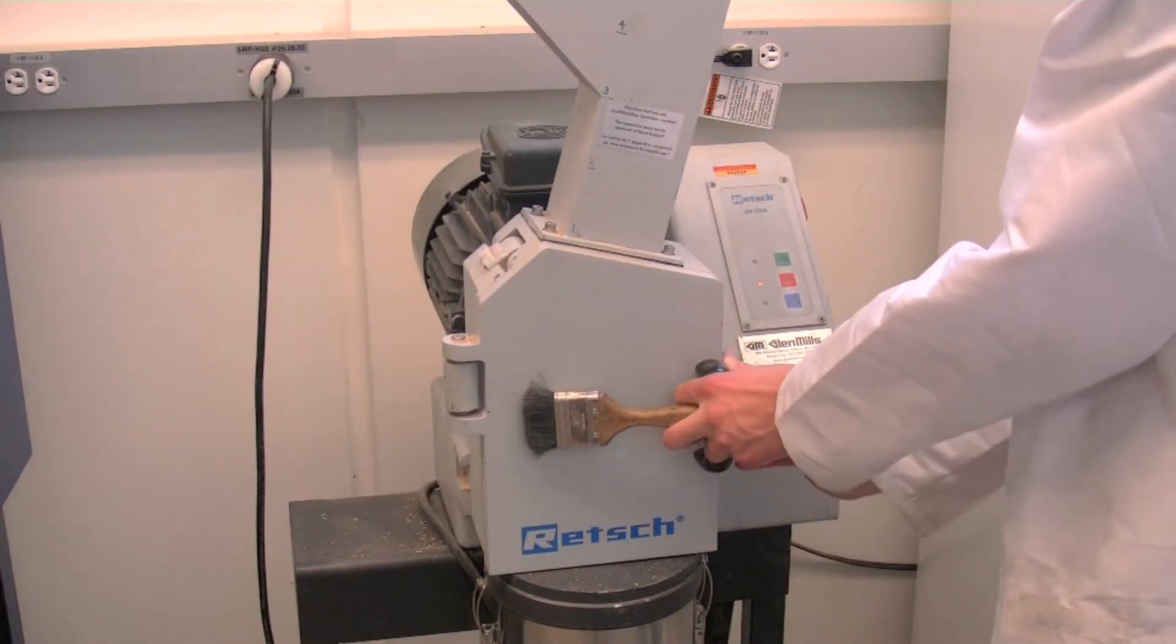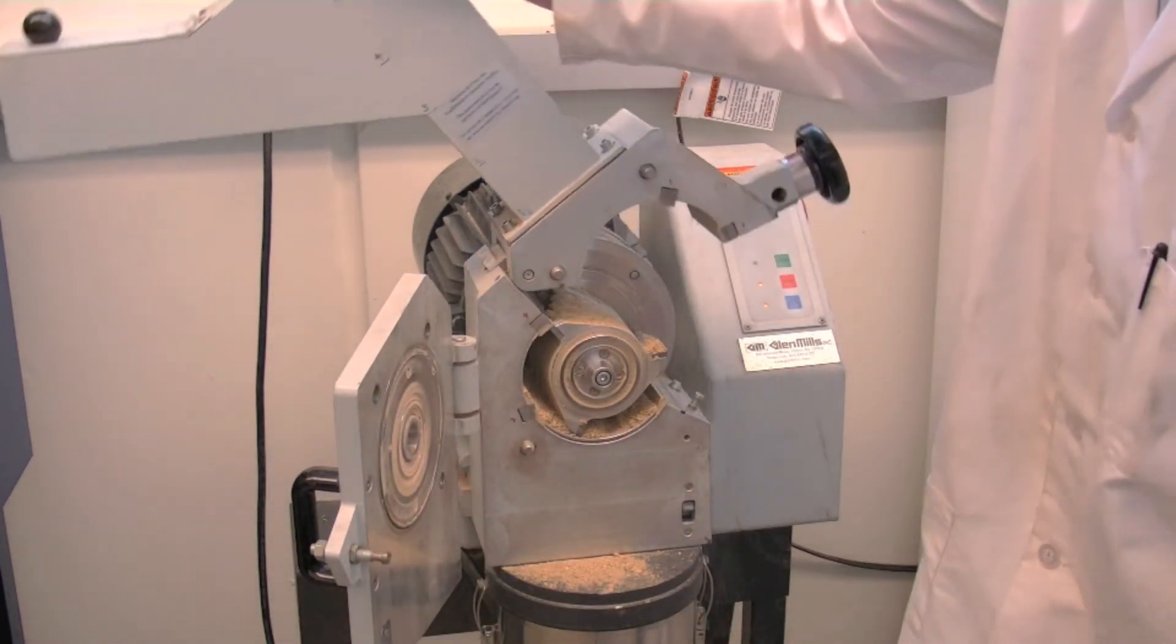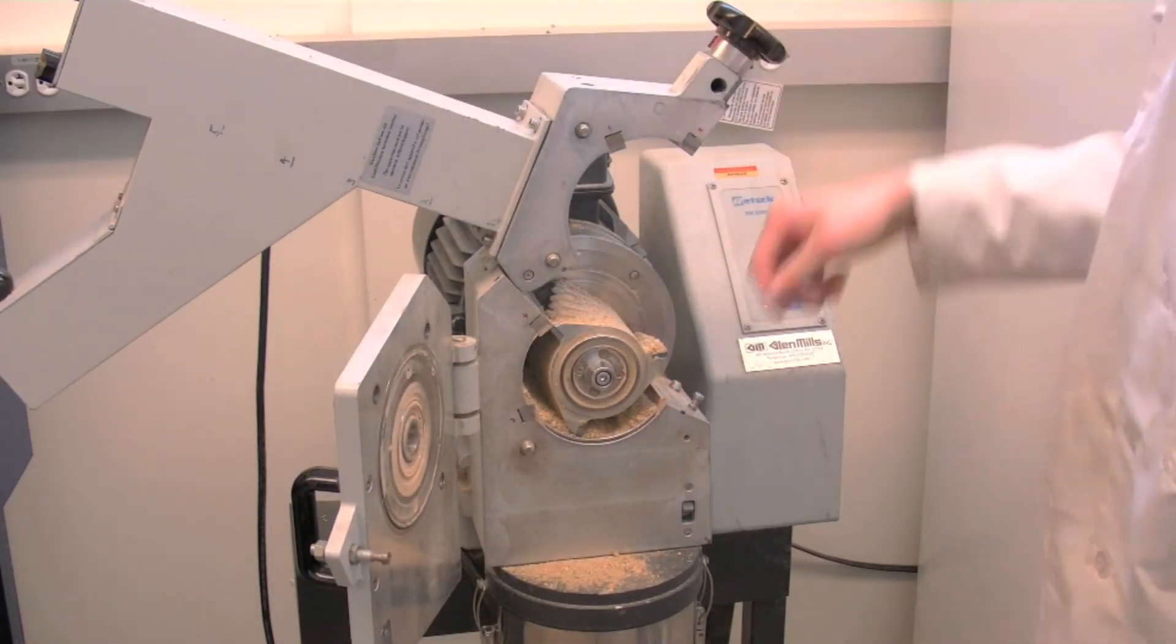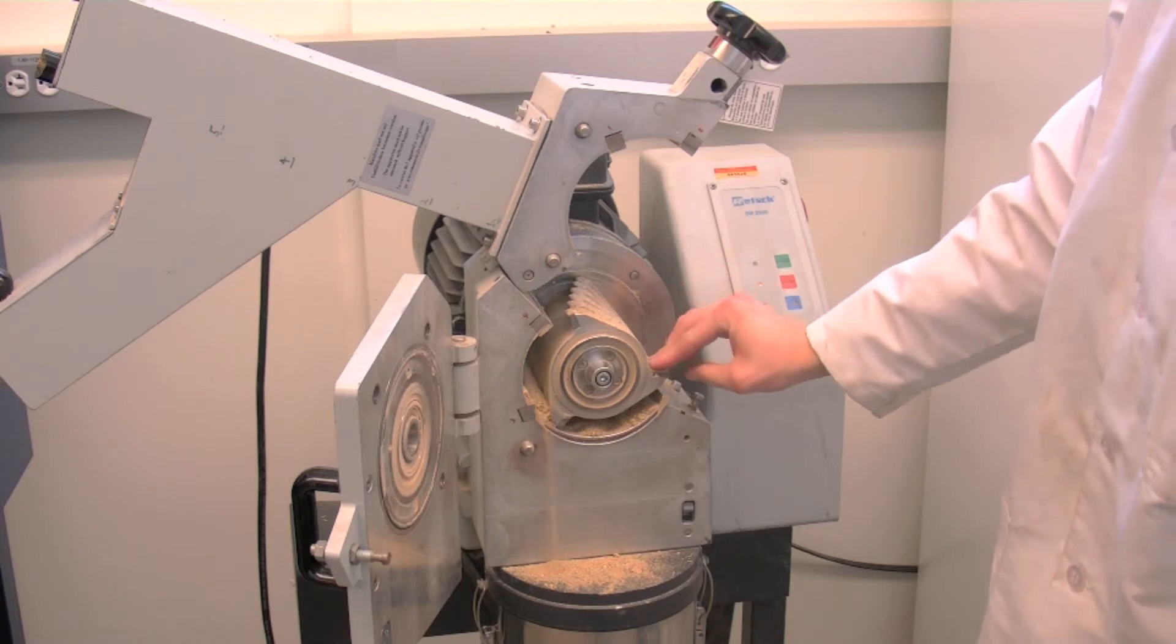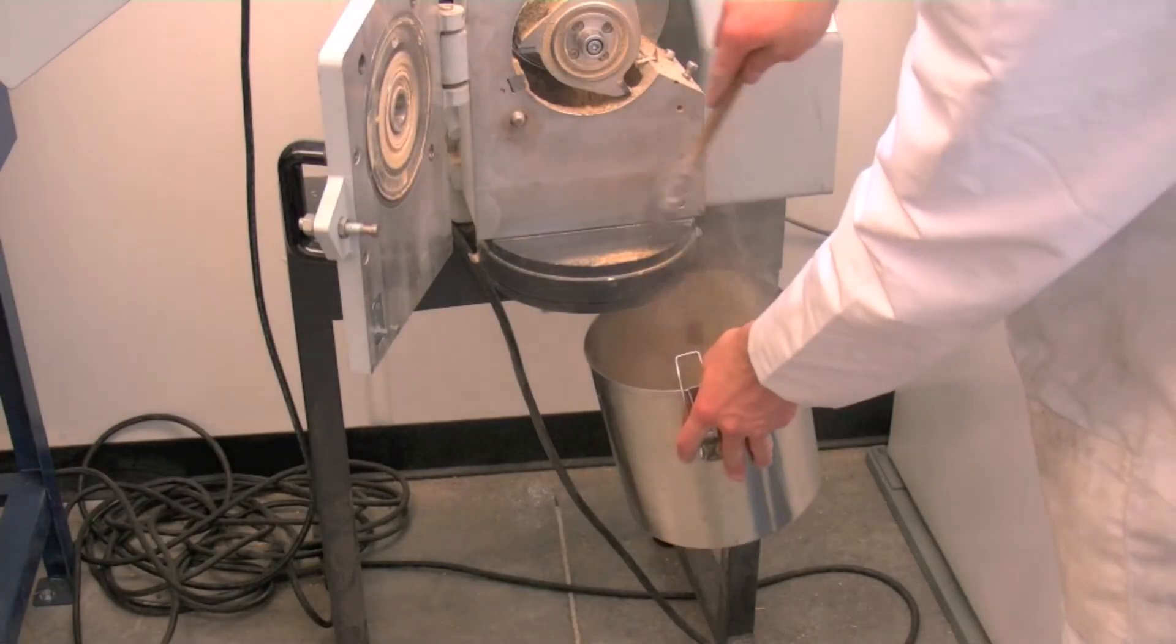Open the guard door and hopper to brush off extra material. Biomass is now in smaller particle sizes in attached bucket. Don't forget to clean up after yourself.